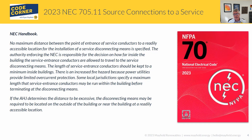The AHJ is responsible for deciding how far those conductors can travel. The handbook even notes that you want to limit them inside the building since they're not protected, which gets back to what 230.90 says about the overload protection function of these overcurrent devices. All in all, if you can keep it to the lengths that were in 2020, that's great. But in 2023 we've been allowed greater distances — just work with your AHJ to figure out what's considered excessive and what's appropriate for that installation.